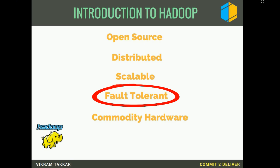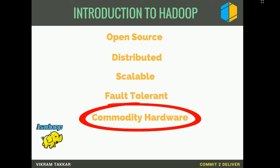What enables Hadoop to compete with high-end machines is fault tolerance — data is replicated on various machines. If one machine goes down, the data can be read from another machine where the data is replicated. This provides a facility to prevent data loss by distributing the data across multiple machines.